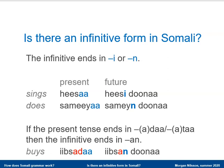There is also a third type of verb that ends in 'da' or 'ta' in the present tense. In this type, the 'da' or 'ta' is replaced by 'n', preceded by 'a', giving a form like 'ibsandonaa' — meaning 'will buy'.